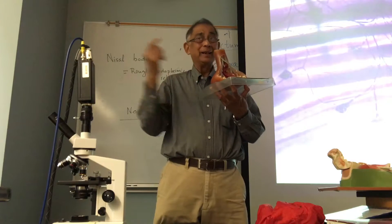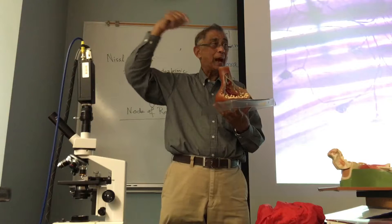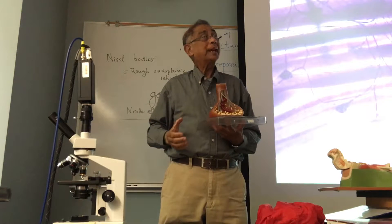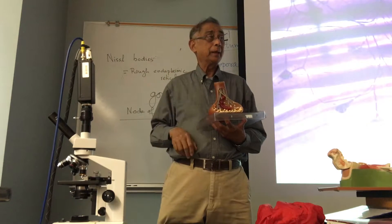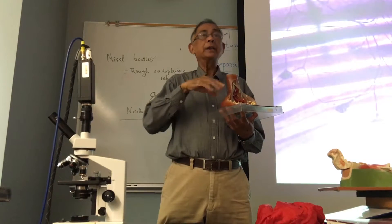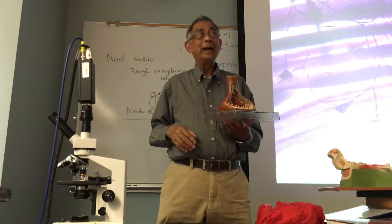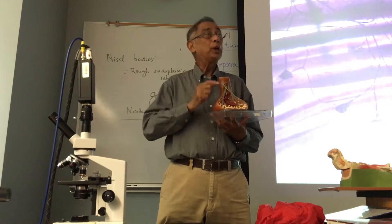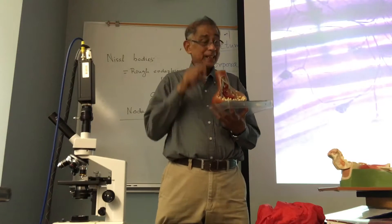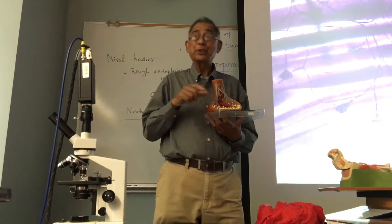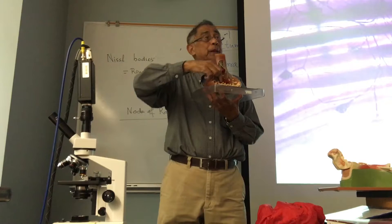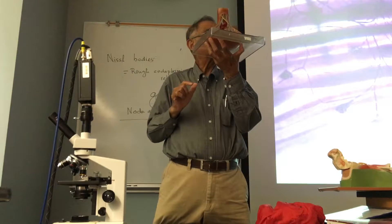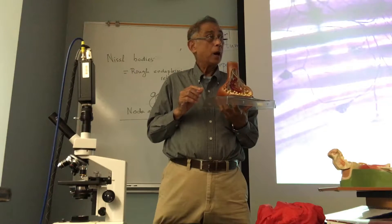When a nerve action potential or impulse arrives at the axon terminal, calcium ions from the extracellular fluid enter into the synaptic end bulb. That calcium stimulates the process of exocytosis — exocytosis of the synaptic vesicles. You can see some of the synaptic vesicles undergoing the process of exocytosis or secretion.